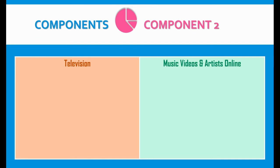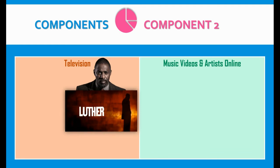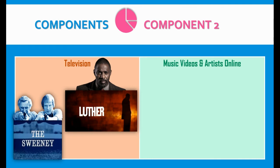Then we move on to Component 2, where we take everything we studied in Component 1 and apply it to specific products or specific media texts. Component 2, Section A is all about television shows, specifically crime drama. We will study the first episode of Luther, the crime drama from the BBC, and the first 10 minutes of an older crime drama called The Sweeney.